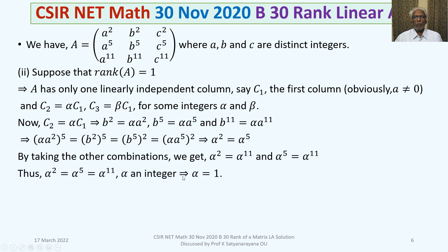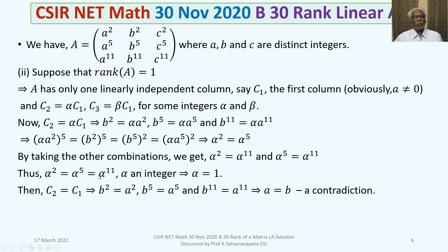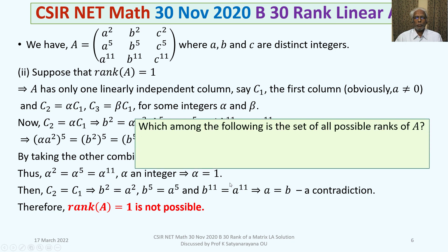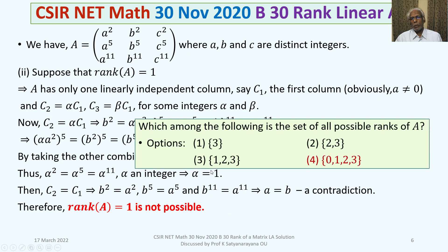If α = 1, then C2 = C1, meaning B² = A², B⁵ = A⁵, and B¹¹ = A¹¹. For integers A and B, this is only possible when A = B, which contradicts the condition that A and B are distinct integers. Therefore rank of A equal to 1 is not possible, and option 3 is eliminated.